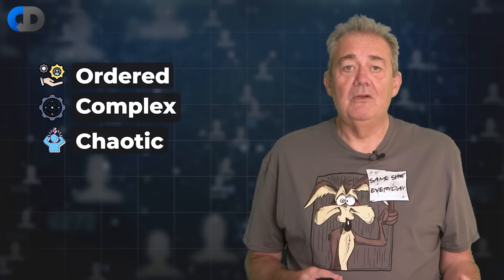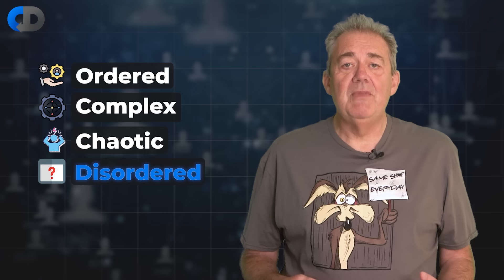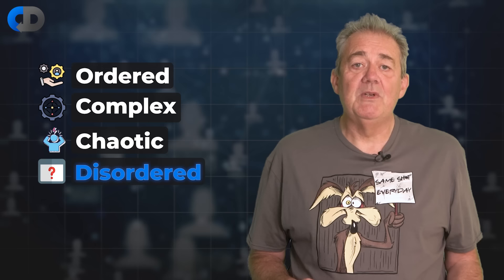The Cynefin framework divides systems into three groups: ordered, complex, and chaotic. It adds 'disordered' as a category, meaning we don't yet know what kind of system we're dealing with. And this is where, in my experience at least, software projects often sit.